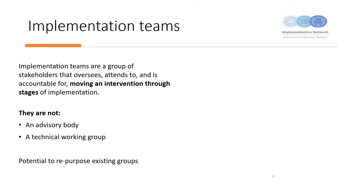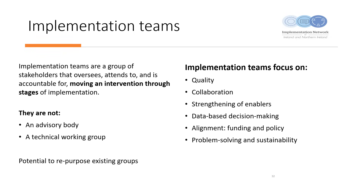Implementation teams move the project through implementation. They typically have some decision-making authority but rely on other governance structures for major decisions. They should have direct access to decision-making authority so that timely decisions can be made to assist with implementation. The implementation team focuses on quality, collaboration, strengthening of enablers, data-based decision-making, alignment with funding and policy, and problem solving and sustainability.